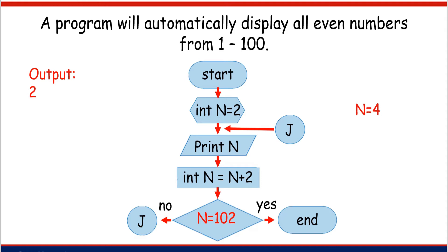Now we are on the decision symbol, which will decide whether the program will continue or not. The condition written inside is n equals 102. The value of our n is 4, so 4 equals 102 — the answer is no. The flowchart goes to the no direction, leading to the J on-page connector. The J exit on-page connector leads us back to print n, so the program prints 4. Then the process repeats: 4 plus 2 is equal to 6, so the new value of n is 6.